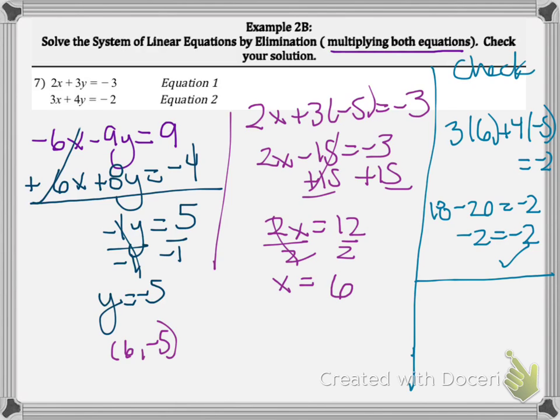We plugged it into equation 2 and that's fine. Now let's plug the x and y into the first equation: 2 times x, which is 6, plus 3 times the y value, which is negative 5. Does that equal negative 3? 6 times 2 is 12, and 3 times negative 5 is negative 15. Does that equal negative 3? Yes, negative 3 equals negative 3. Therefore we are done.